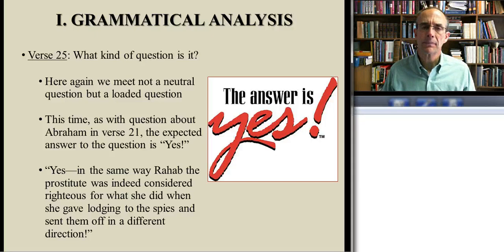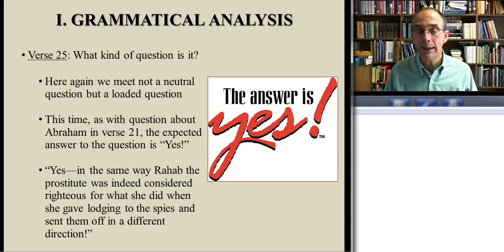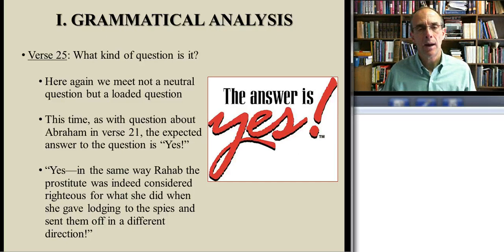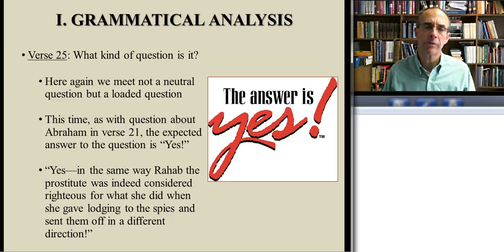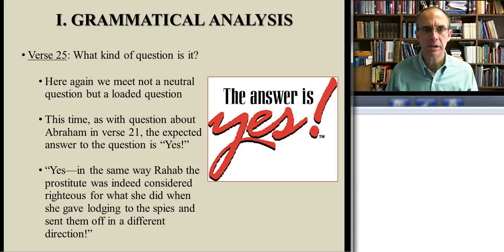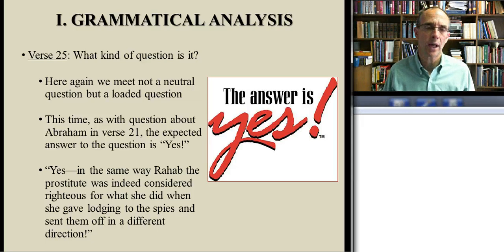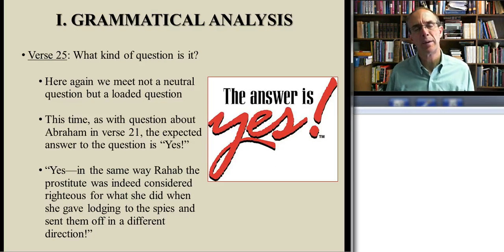In this passage, then, we've seen a number of ways in which the Greek tells us things that the English does not. There's a lot more to interpretation, of course, but one important way of rightly reading the Bible is to approach it grammatically. We've seen in this passage a number of important ways in which the Greek text has already made helpful points as we seek to understand what God was saying through James to his original audience — and what God is saying to us. When we come back, we'll turn to our next principle of Reformed hermeneutics and approach the text from a literary point of view.